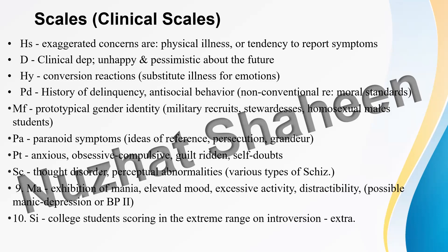Now for clinical scales: the first is Hypochondriasis (HS), which measures abnormal concerns about bodily functions. For example, a person who says they always have a headache, always have knee pain, or always feel dizzy — these are abnormal concerns about bodily functions that this scale measures.